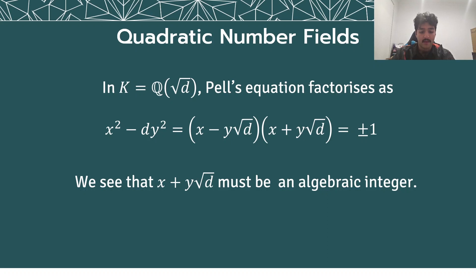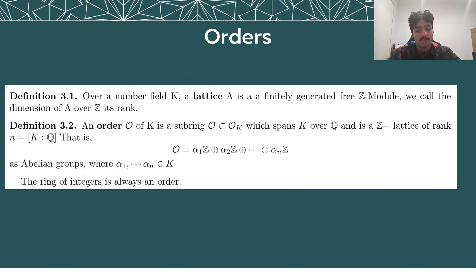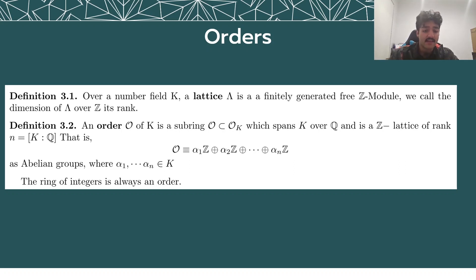At present, no deterministic algorithm of polynomial time complexity exists to decide whether a number is square-free or extract the square-free part. In circumstances where the ring of integers is not applicable, a weaker notion of an order can be used. A lattice of a number field is a finitely generated free module over the integers. An order of a number field k is a subring of the ring of integers which spans k over Q and is a Z-lattice. The ring of integers is the largest order in k.